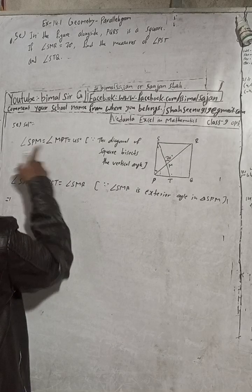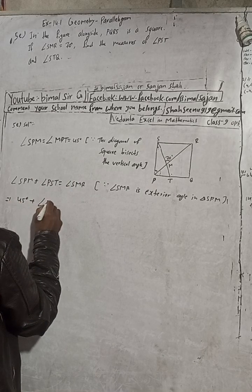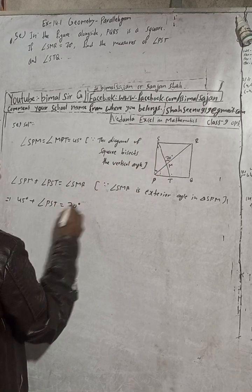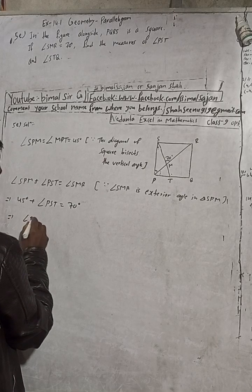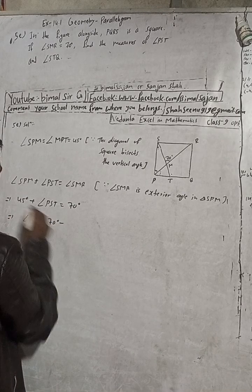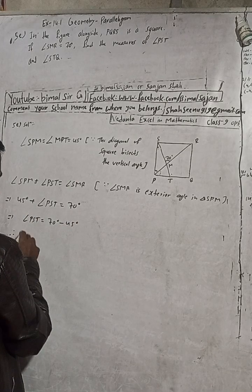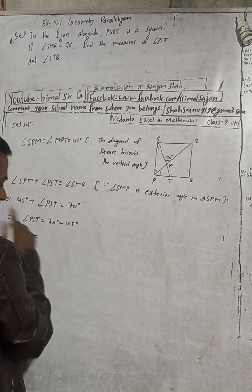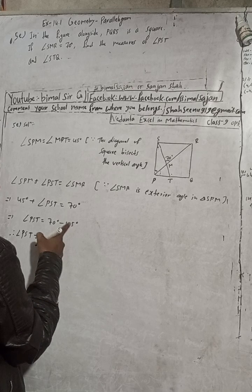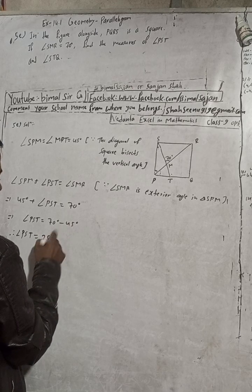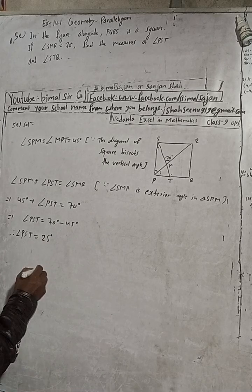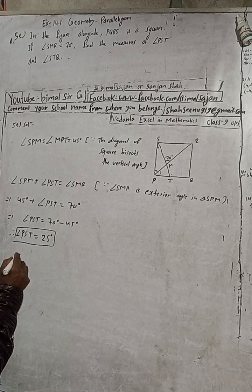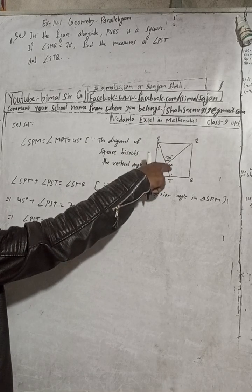From this, angle SPM plus angle PST equals 70 degrees. Therefore, angle PST equals 70 minus 45 degrees, which is 25 degrees. So angle PST is 25 degrees.